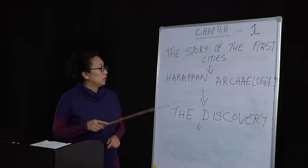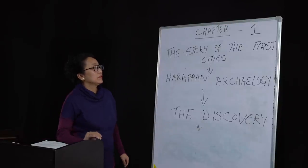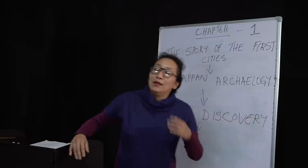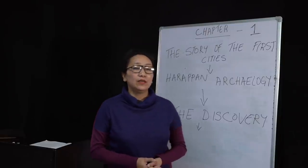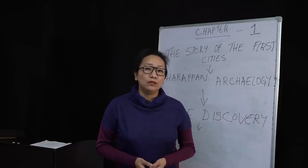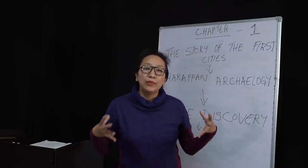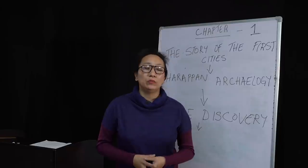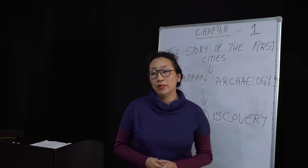Next we look at the discovery — how was the Harappan civilization discovered? It was more or less discovered by mistake. In 1856 there was a railway construction going on between Lahore and Multan where they found millions of bricks, called 'ita.' From there, there was an inquisition that a new discovery had been made.